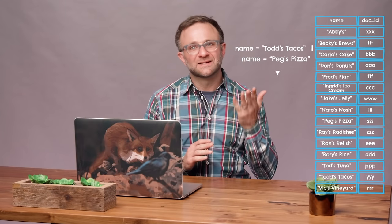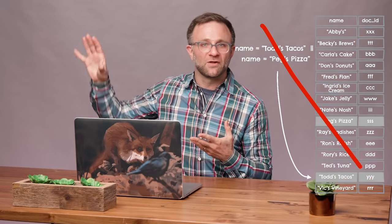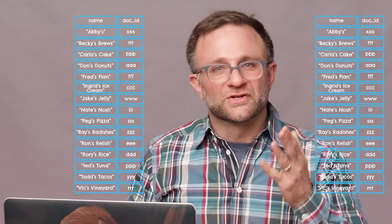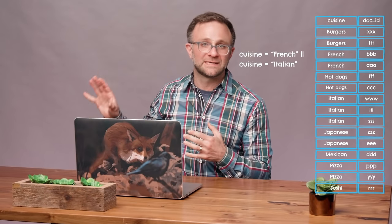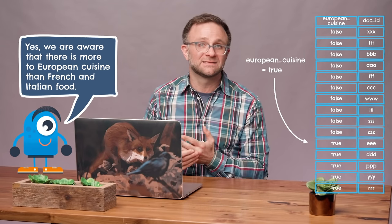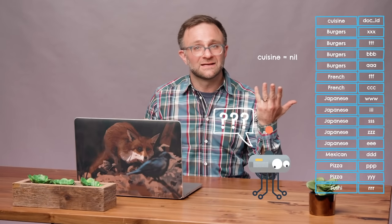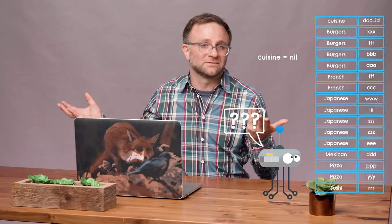OR queries also aren't directly supported, because they break the 'find one point in the index and grab adjacent documents' rule. You'd have to run both queries separately, grab all the information, and then merge the two sets of documents on the client. Alternatively, if you know in advance you want a specific OR query, you could add a value in the database representing the OR'd value — for example, adding a 'European cuisine' field that's true for both French and Italian. NOT-EQUAL-TO queries are also unsupported for similar reasons, as is looking for documents where a value doesn't exist — if it's not there, it's not in the index.